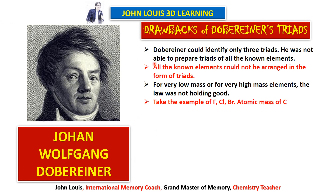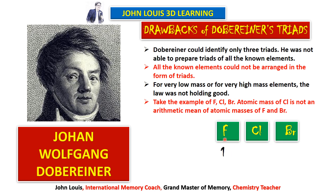For example, take fluorine, chlorine and bromine — though these three elements have similar properties, the atomic mass of chlorine is not the arithmetic mean of fluorine and bromine. Fluorine's atomic mass is 19 and bromine is 80, so the average is 49.5, but chlorine is only 35 — nowhere close to that. So when atomic mass is low or high, his triads rule did not hold good. Therefore it was a failure as a complete system, though it was a beginning for classifying elements.